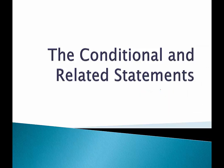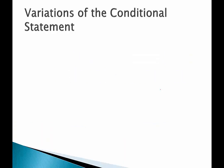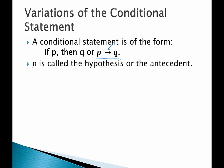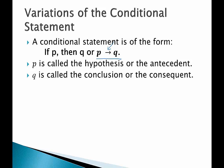Hello and welcome to HelpYourMath.com. In this video we're going to talk about the conditional statement and three related statements to it. First let's review what a conditional statement is. A conditional statement is of the form if P then Q, or we can use the notation with the arrow. P is called the hypothesis or the antecedent, and Q is called the conclusion or the consequent.